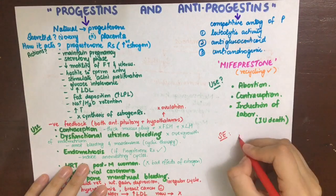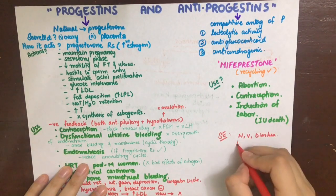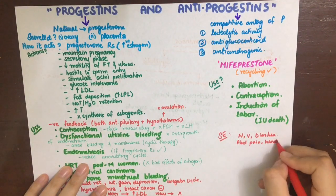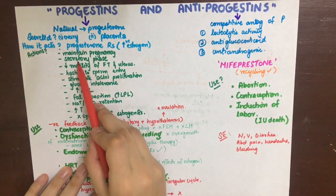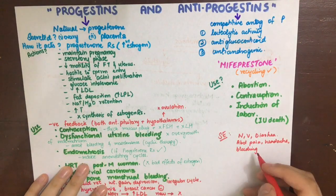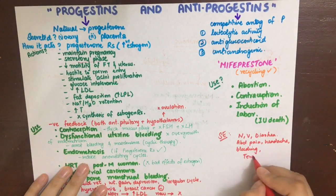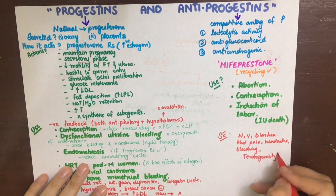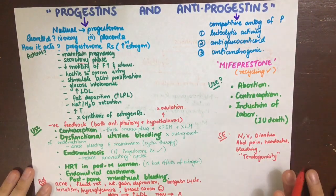The side effects of mifepristone include nausea, vomiting, diarrhea, abdominal pain, headache, and bleeding — because as an antiprogestin, it causes the endometrial layer to slough off — and also teratogenicity.